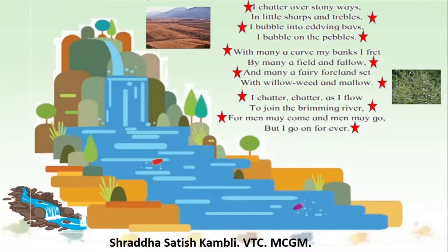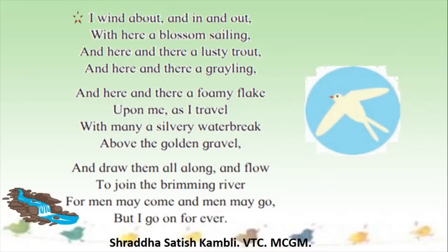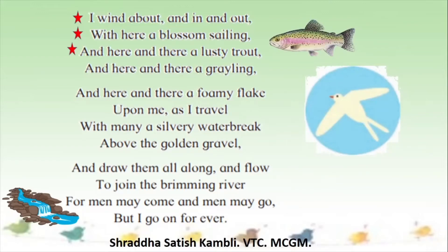Moving on to the next few lines. 'I wind about and in and out' — I take many turns. 'With here a blossom sailing' — a flower falls into the brook and sails along with the water. 'And here and there a lusty trout.' A trout is a kind of fish found in fresh water, and brooks have fresh water in them. 'And here and there a grayling' — graylings are also a kind of fresh water fish. So in the water you can see blossoms sailing and different kinds of fish.